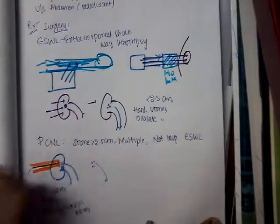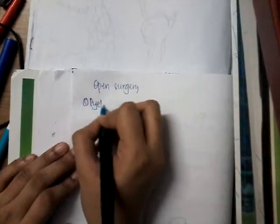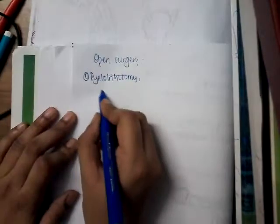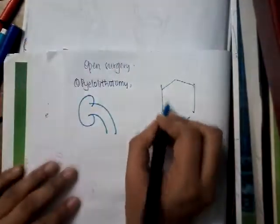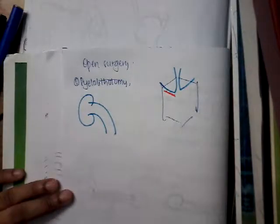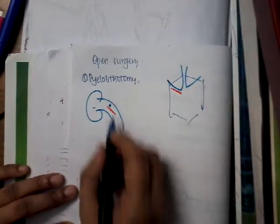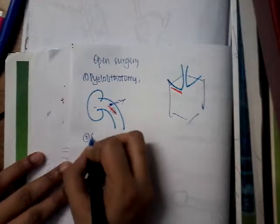If these options fail, then open surgery is required. The first open surgery option is pyelolithotomy. In this, a subcostal incision is given just below the costal margin, the kidney is approached, the renal pelvis is opened, and the stone is removed. Once the stone is removed, the incision is closed.